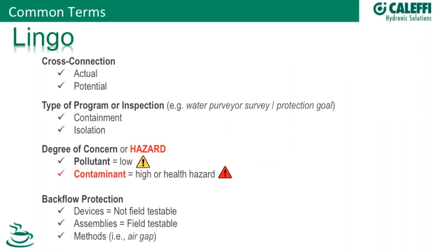Cross connections — we'll show actual and potential cross connections in later slides. Types of inspection programs: containment and isolation. That also applies to what you're going to do with a hazard concern. Are you going to isolate that from everything in the system, or containment — are you going to contain this building from the entire community or municipality system? Then degree of hazard: is it polluted or is it contaminated?